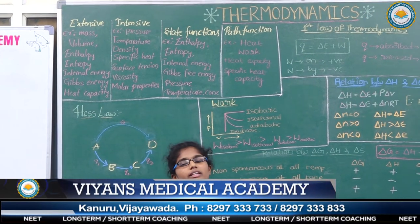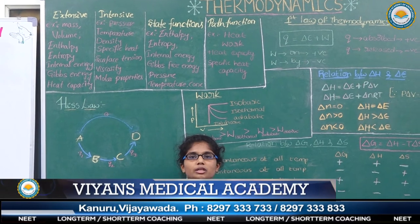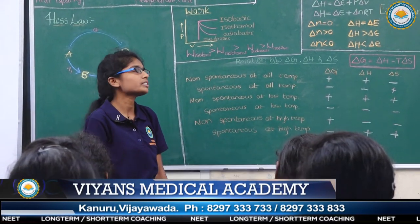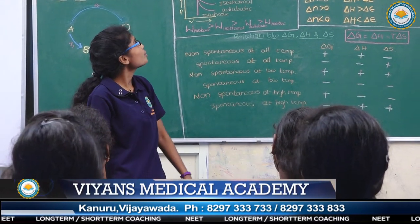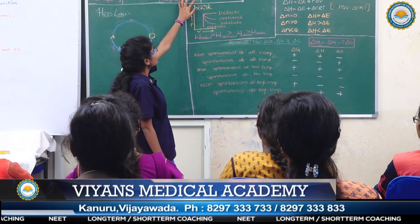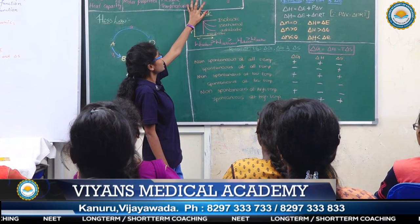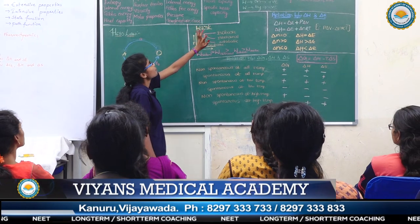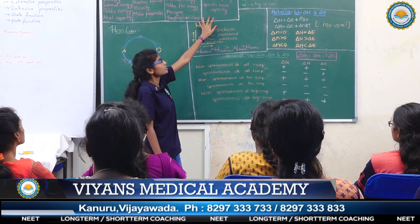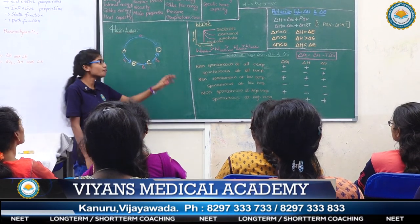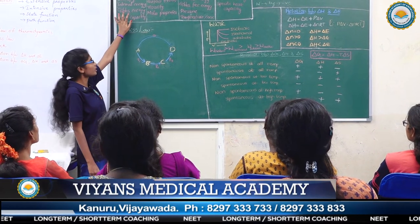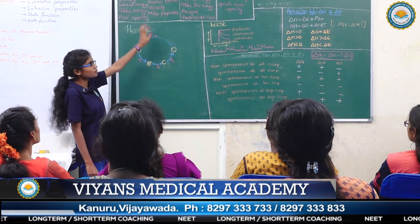Path function: the properties which depend upon the path of the system are known as path functions. The examples of path function are heat, work, heat capacity and specific heat capacity. Friends, these examples are very important from an exam point of view, so please concentrate on these examples.